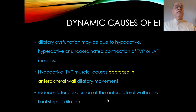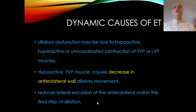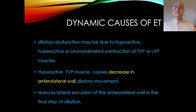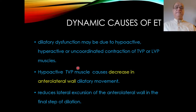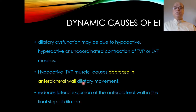Enlarged adenoids can force the torus tubarius anteriorly to close the tubal orifice instead of dilating it open. Dilatory dysfunction may be due to hypoactive, hyperactive, or uncoordinated contractions of tensor veli palatini and levator veli palatini muscles. A hypoactive tensor veli palatini muscle causes decreased anterolateral wall dilatory movement and reduces lateral excursion in the final step of dilatation — mechanisms discussed in the anatomy and physiology video.